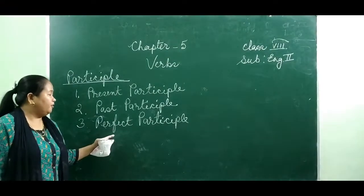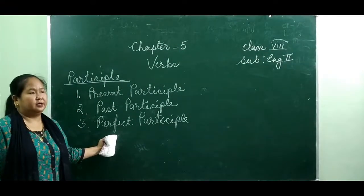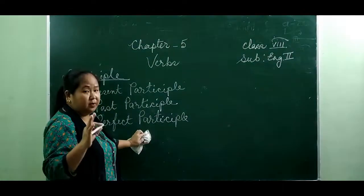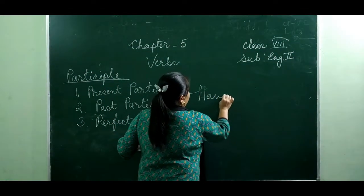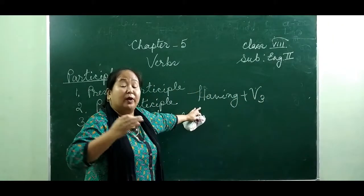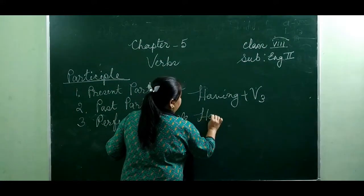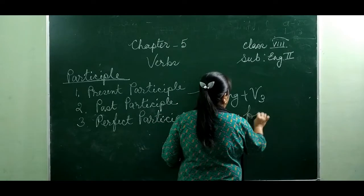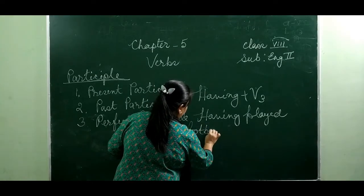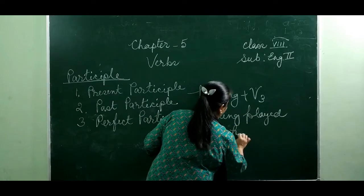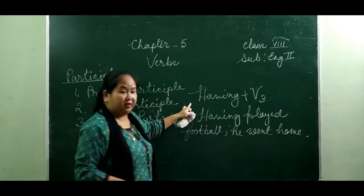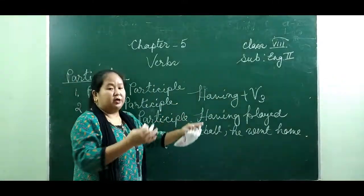Perfect participle indicates completed action. For example: you played football and then you went home. We form perfect participle by using 'having' plus verb 3 — the third form of the verb. So: 'Having played football, he went home.' This is the use of perfect participle. We use perfect participle to shorten sentences.